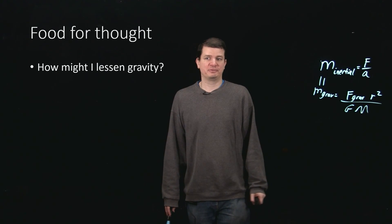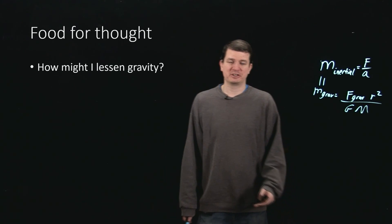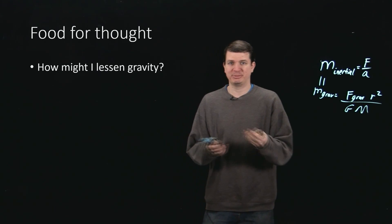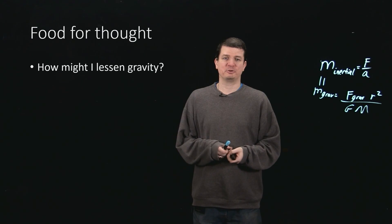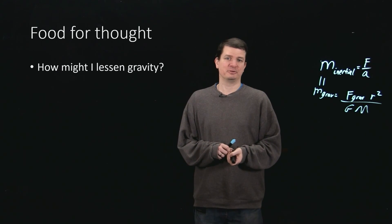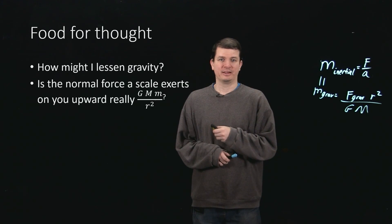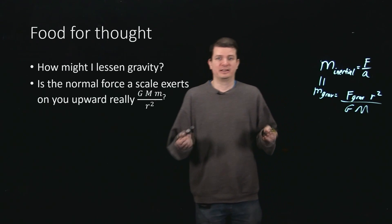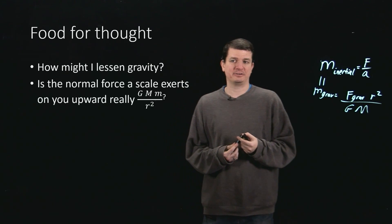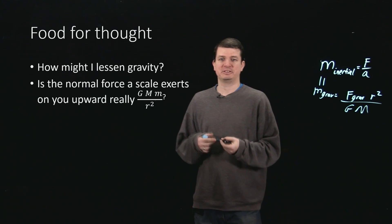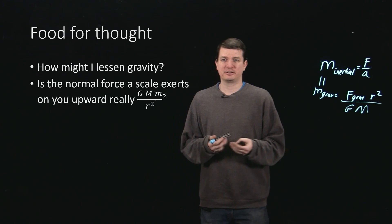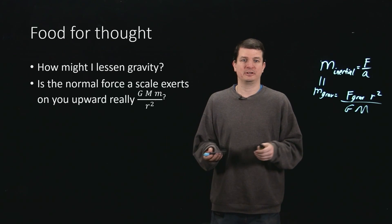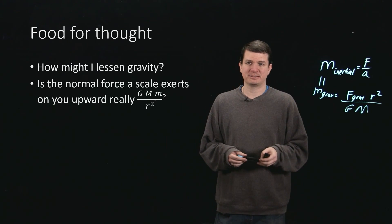So some food for thought. We've talked about the ability to create artificial gravity just by spinning. How might I go about lessening the force of gravity? And to guide this, is the normal force that a scale exerts upon you when you stand on it always really in magnitude GMm on r squared? Or is it something else?